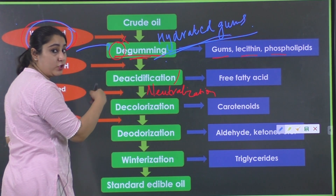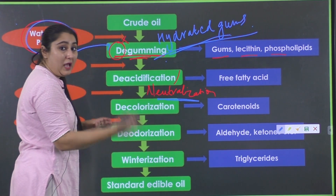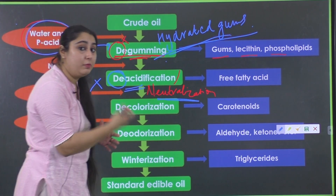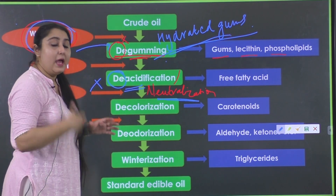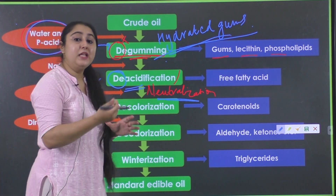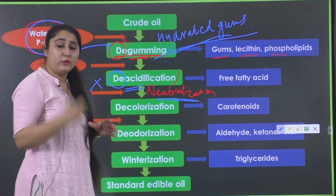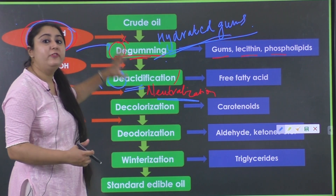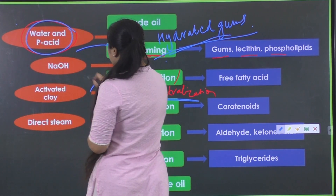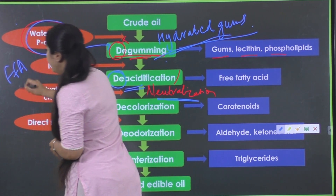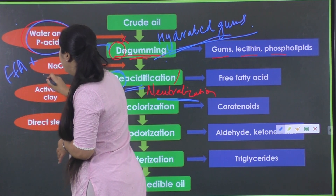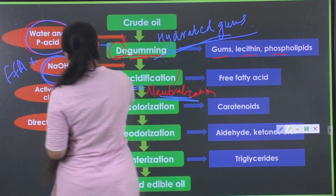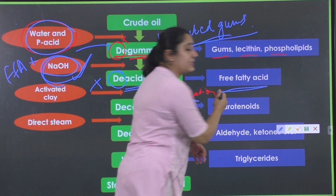Next we have de-acidification, which is also known as neutralization. As the name tells, it involves removal of the acid — specifically the free fatty acids present in the oil. Free fatty acids are not desirable; if present, the taste, odor, and shelf life of the oil will be affected. So in order to neutralize these acids, we add a base like NaOH so that the free fatty acids can be removed.